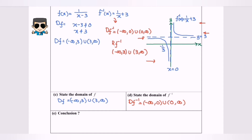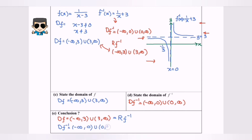So as we can see their relationship: the domain for f, which equals negative infinity until 3 union 3 until infinity where 3 is not included, actually equals the range for f inverse. And we can also say that the domain for f inverse, which equals negative infinity until 0 union 0 until positive infinity where 0 is not included, actually equals the range of f.